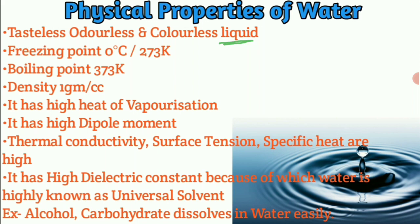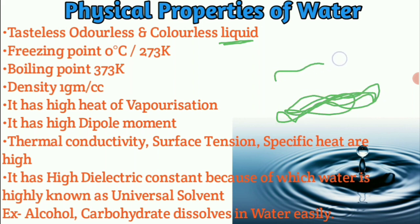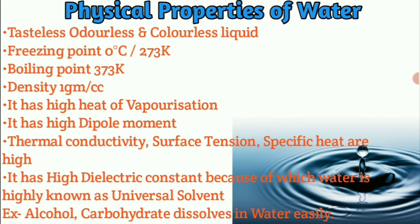Water is transparent. For example, when you look at a glass of water you can see through it; a sky blue color appearance in large bodies is due to reflection. The freezing point of water is 0 degree Celsius, which is 273 Kelvin. The boiling point is 100 degree Celsius, which is 373 Kelvin. The density of water is 1 gram per cubic centimetre.